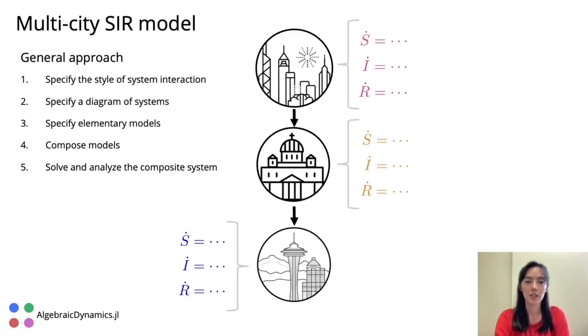To demonstrate the general approach of AlgebraicDynamics, we're going to consider the example of a multi-city SIR epidemiology model. The idea is we have three cities, city one, city two, city three, with people flowing between them, from city one to city two, and from city two to city three.